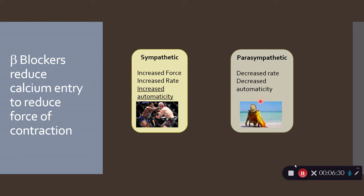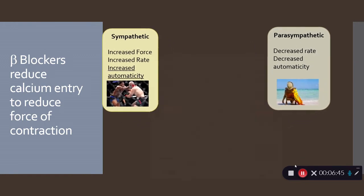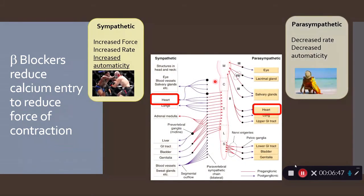The parasympathetic nervous system, which is the rest and digest branch of the autonomic nervous system, decreases the rate. It doesn't affect the force but it does also decrease automaticity. The heart receives input from both the sympathetic nervous system and the parasympathetic nervous system.